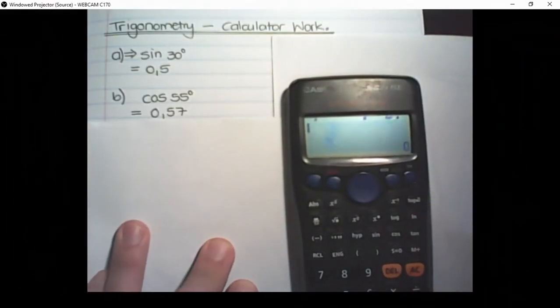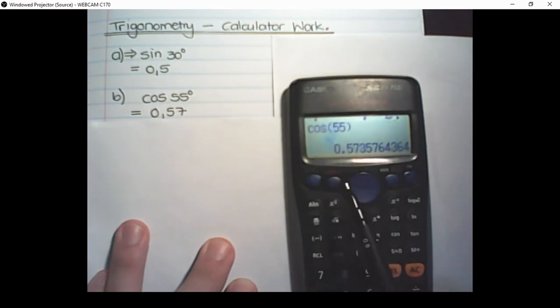The next value that we would use on our calculator is cos of 55. So I press cos and 55. You can close the bracket. It's good practice. I press the equal sign at the bottom and I see the cos of 55 is 0.57357.